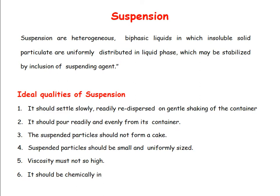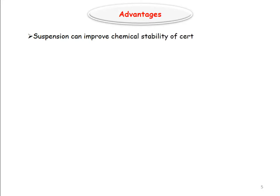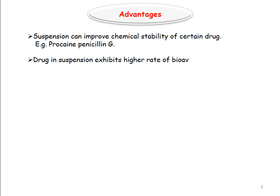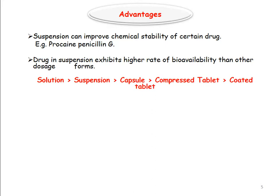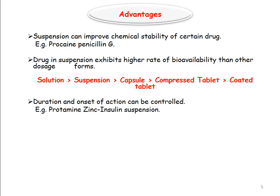The suspended particles should be small and uniformly sized; viscosity of suspension must not be too high; it should be chemically inert. Advantages of suspension dosage form: suspension can improve chemical stability of certain drugs like procaine penicillin G; drug in suspension exhibits higher rate of bioavailability than other dosage forms like capsules, compressed tablets, and coated tablets; duration and onset of action can be controlled, for example protamine zinc and insulin suspension.